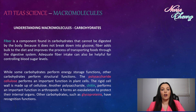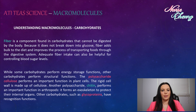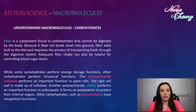While some carbohydrates perform energy storage functions, other carbohydrates perform structural functions. The polysaccharide cellulose performs an important function in plant cells — the rigid cell wall is made up of cellulose. Another polysaccharide, chitin, performs an important function in arthropods, forming the exoskeleton to protect their internal organs. Other carbohydrates, such as glycoproteins, have recognition functions.